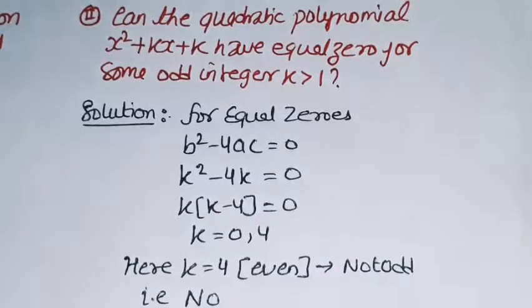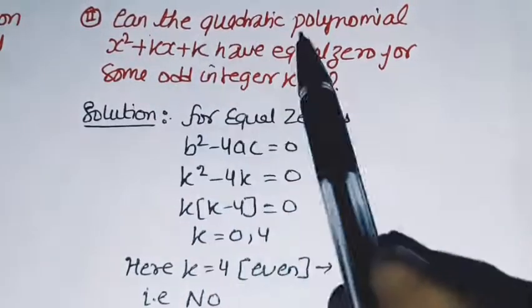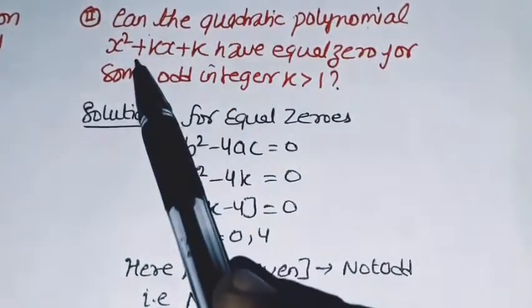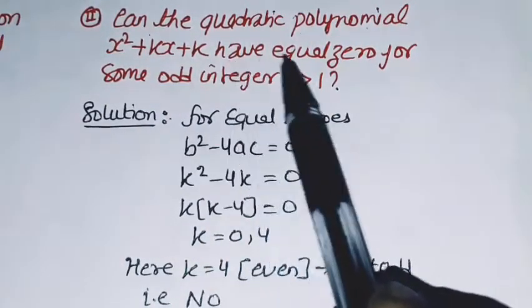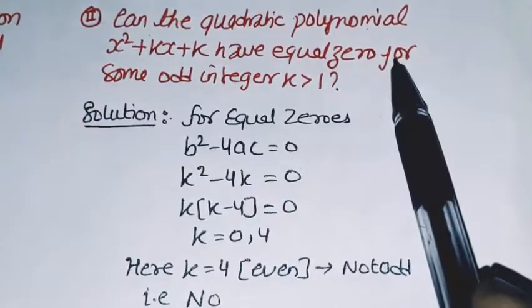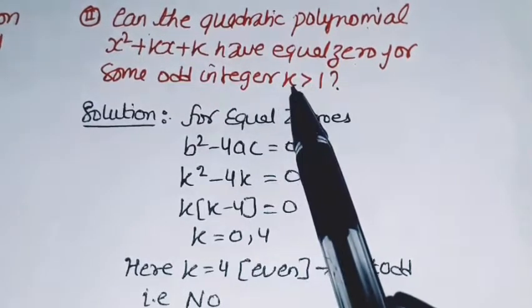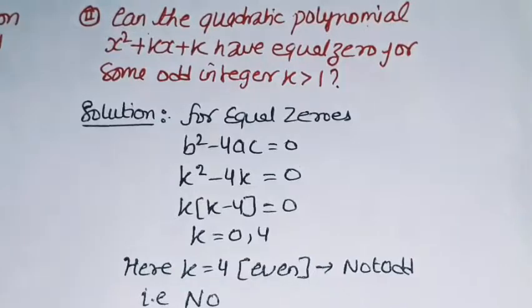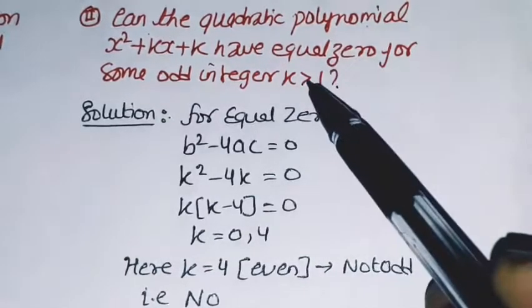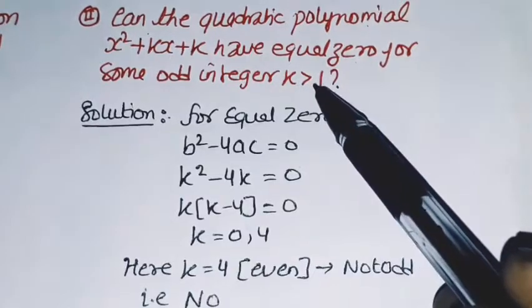Another problem of polynomials: Can the quadratic polynomial x² + kx + k have equal zeros for some odd integer k greater than 1? What are they asking? When k is greater than 1...